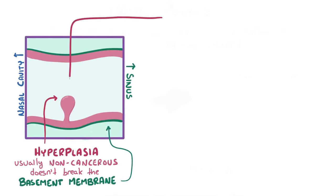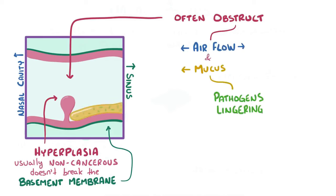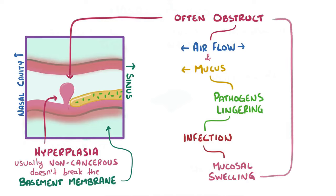Unfortunately, they often obstruct airflow as well as mucus drainage, which allows pathogens to linger in the sinuses and cause infections. Recurrent infections cause mucosal swelling as immune cells infiltrate the tissue and create an inflammatory response, making airway obstruction and mucus drainage even worse.